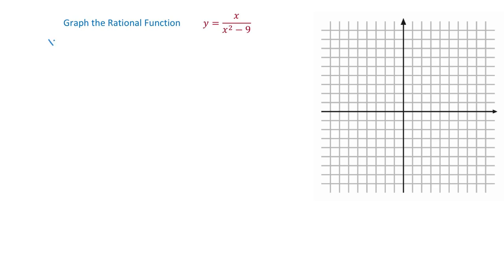Let's start by finding any x-intercepts. X-intercepts are any points where the graph crosses the x-axis and any point on the x-axis has the y coordinate 0. So in this function we will replace y with 0 and solve for x. So x over x squared minus 9 equals 0. A fraction equals 0 only if the numerator equals 0. So the numerator in this case is x, and x equals 0. So we got the x-intercept and that is x equals 0.